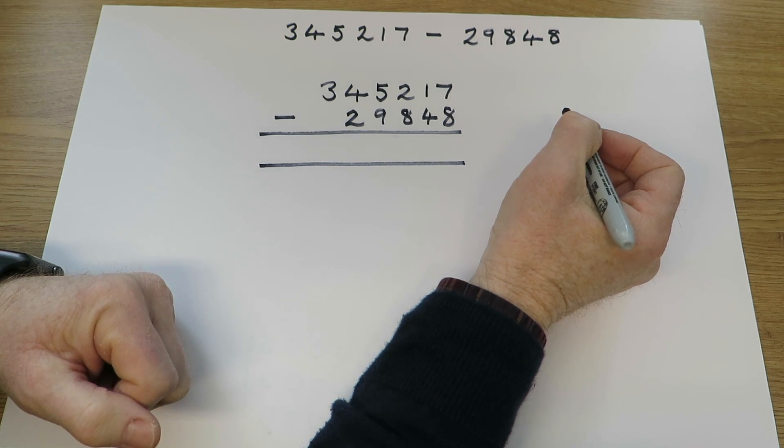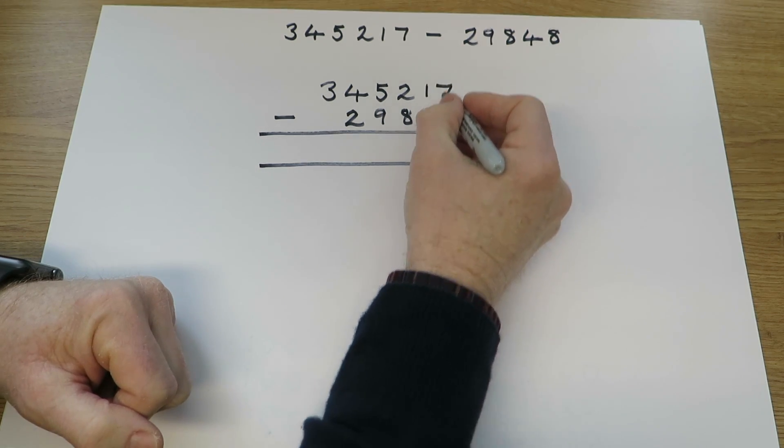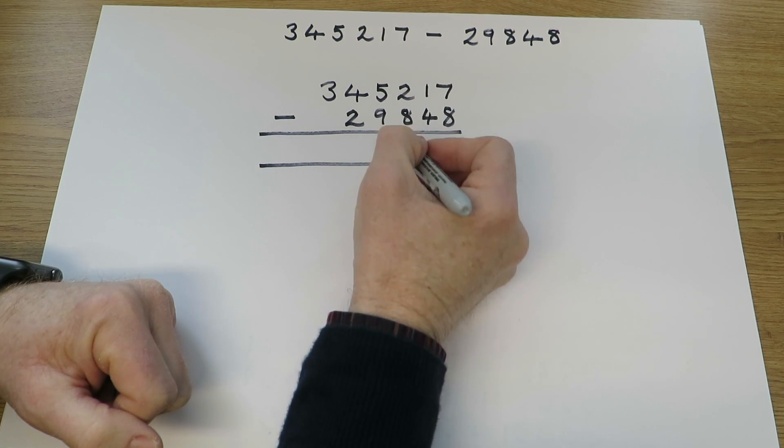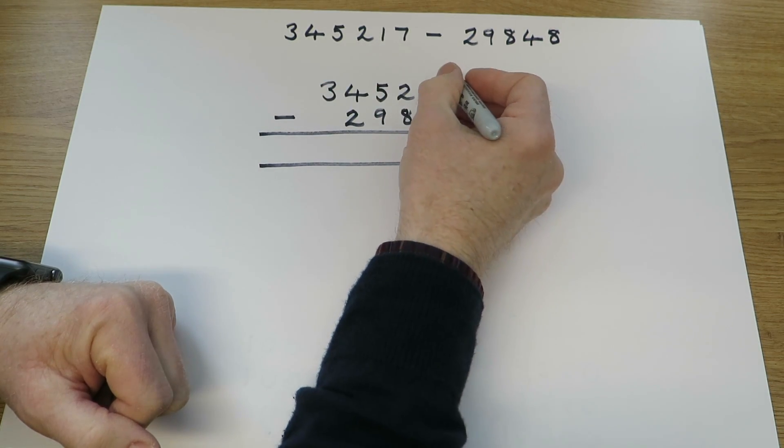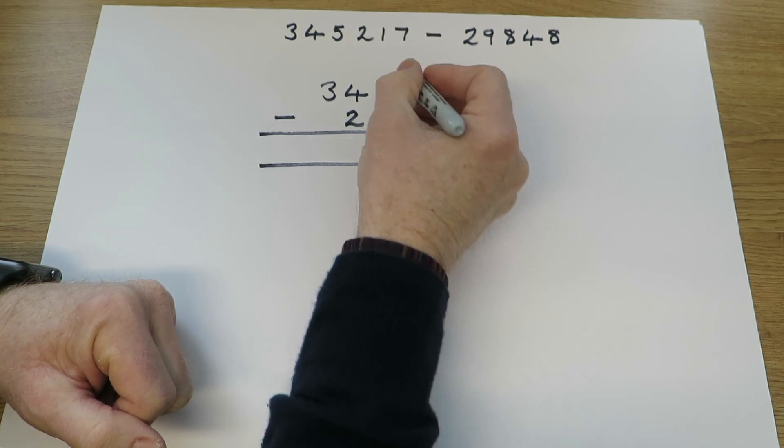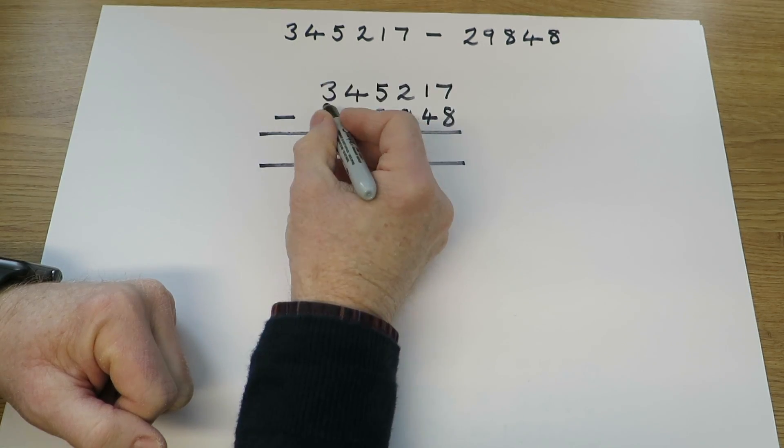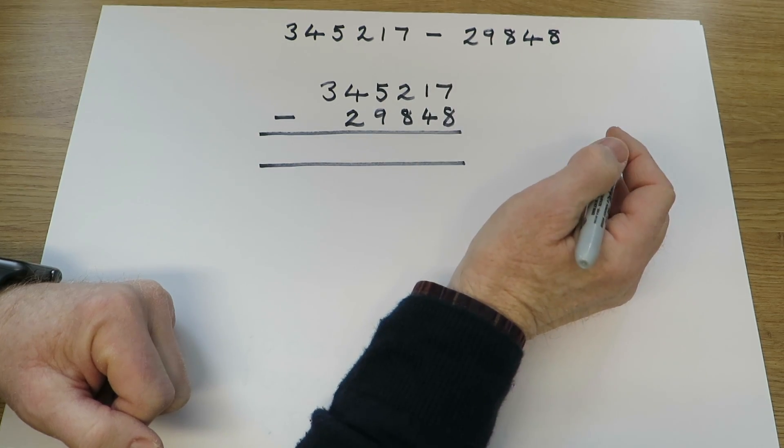It's good to encourage the children to set the numbers out so they're neatly arranged in columns with the numbers clearly one above the other. This question here is obviously arranged so that the units are in line, and the tens, the hundreds, the thousands, the ten thousands, and the hundred thousands, all neatly in line.